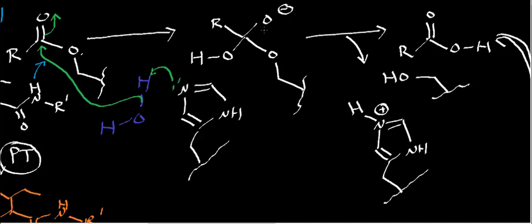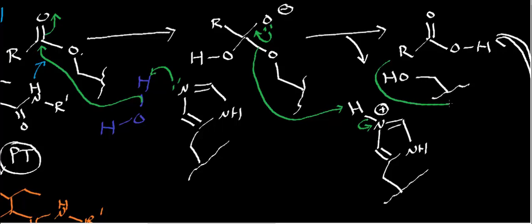Once we generate that second tetrahedral intermediate, the alkoxide electrons again reform the pi bond. This time they kick off the serine residue. As the serine alkoxide leaves, it picks up the proton from the histidine, regenerating once again the resting state of the histidine. Here you can see the serine residue leaving.